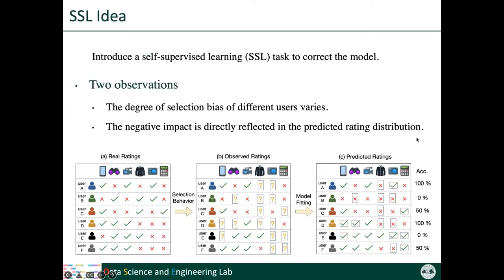In our work, we seek to solve the problem of selection bias with a novel strategy. The original recommendation model is trained by supervised learning, but the supervision signals from the observed rating data are biased due to selection bias. Thus, we want to introduce additional debiased signals to correct the model. We propose to introduce a self-supervised learning (SSL) task to provide such debiased supervision signals.